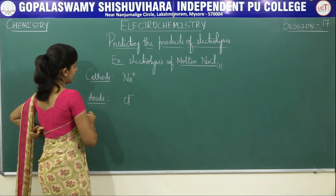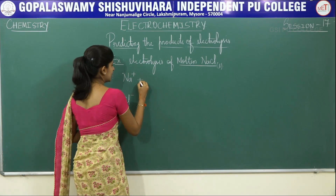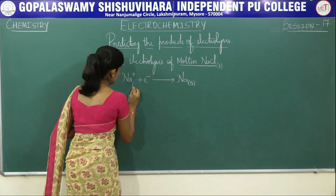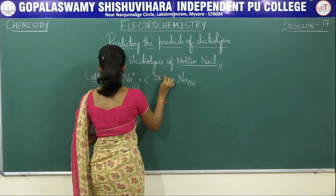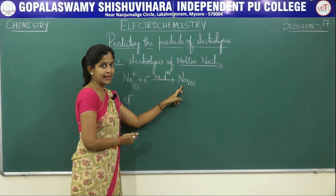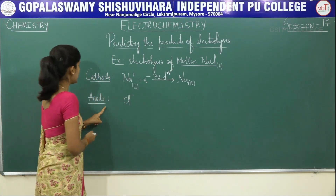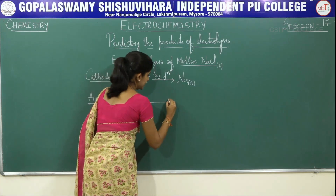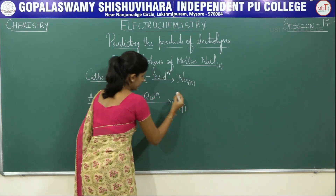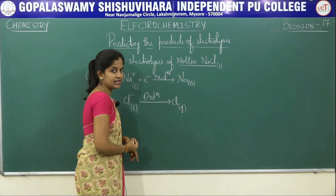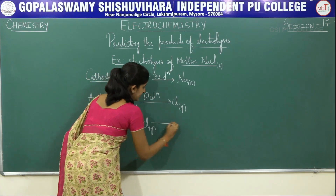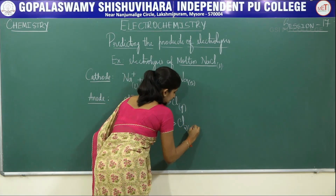What happens at cathode? Na+ ions undergo reduction to give you solid sodium. Reduction happens at cathode and metallic sodium is deposited there. Your chloride ions undergo oxidation to give you Cl gas, which is not stable — its atomicity is 2. So 2 Cl atoms combine together as a secondary change to give you Cl2 gas as the product.